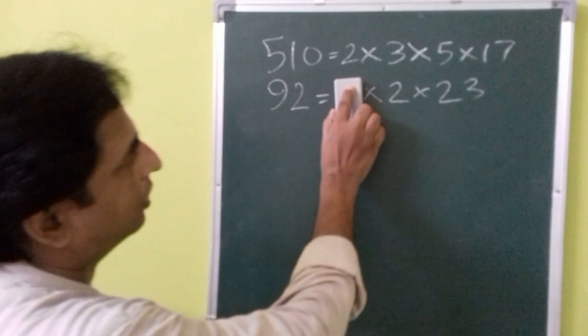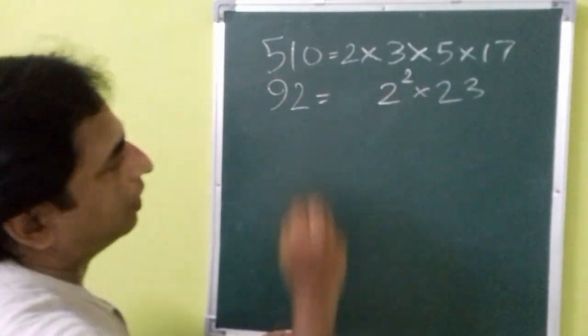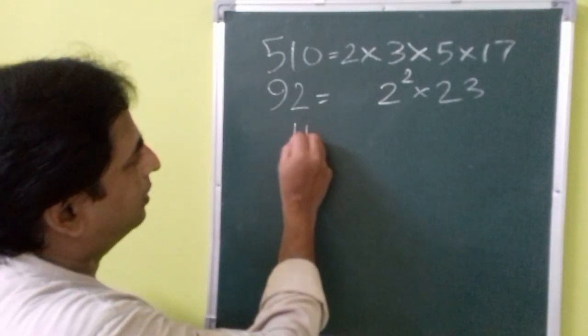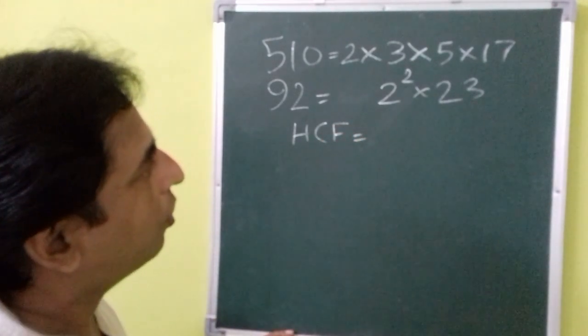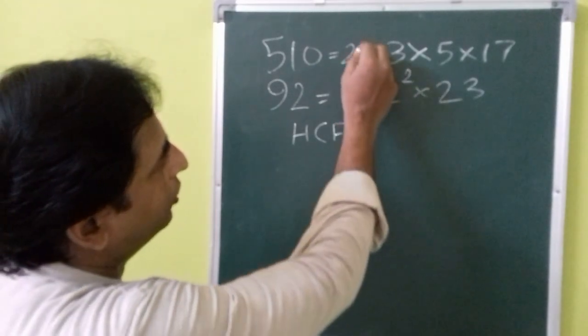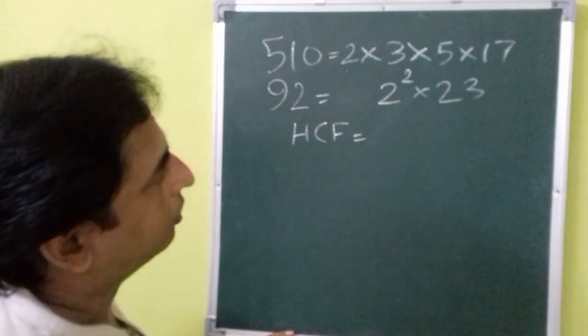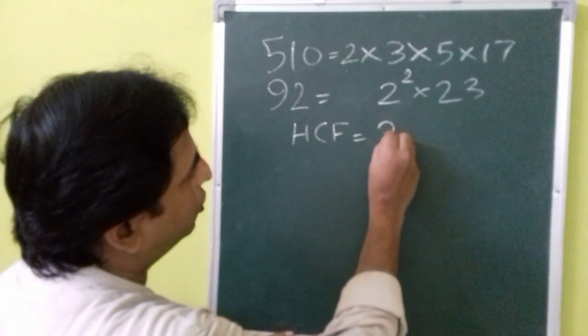You can also write it as 2 squared times 3 times 5 times 17. Then we need to find the HCF. HCF is the least power or the lowest power of only common factors. Here, only common factor is only 2. Rest everything are not common.